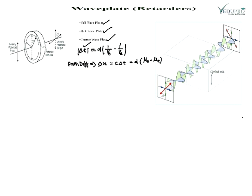The phase difference between the ordinary and extraordinary rays is such that the path difference for a half wave plate is approximately λ/2. We call this the phase difference — in both cases, the half wave plate produces a phase difference of π.